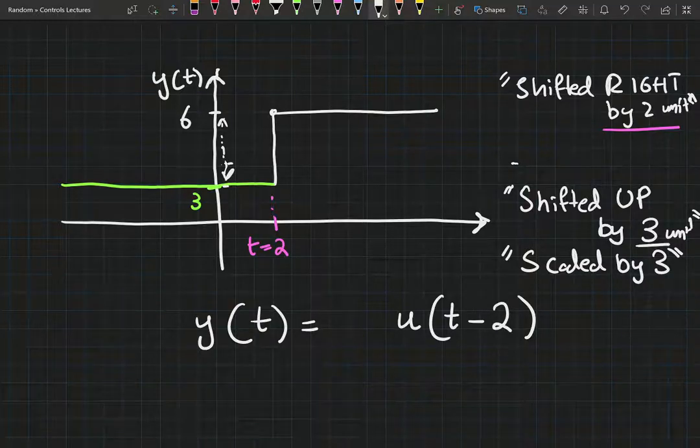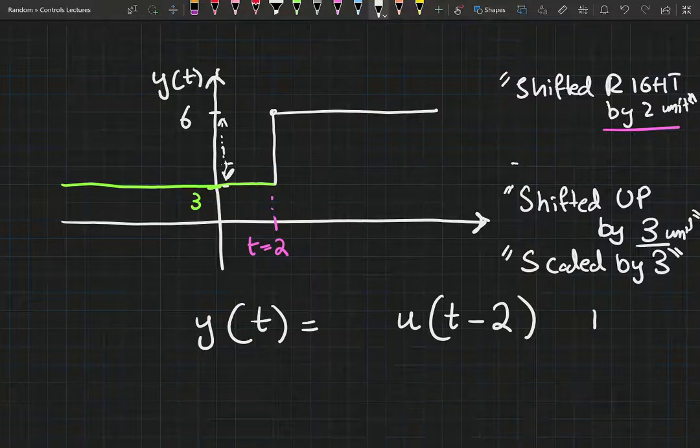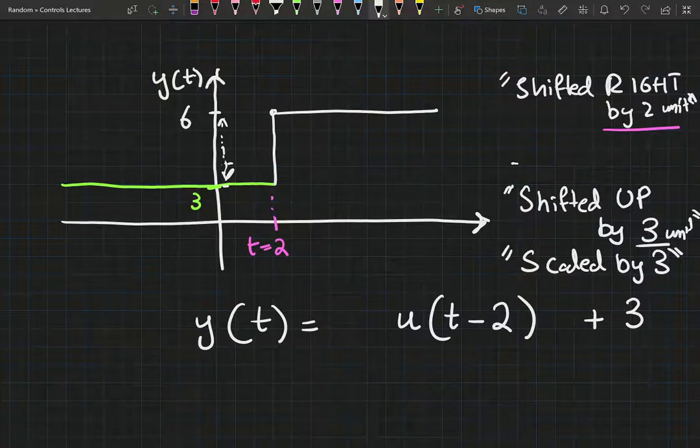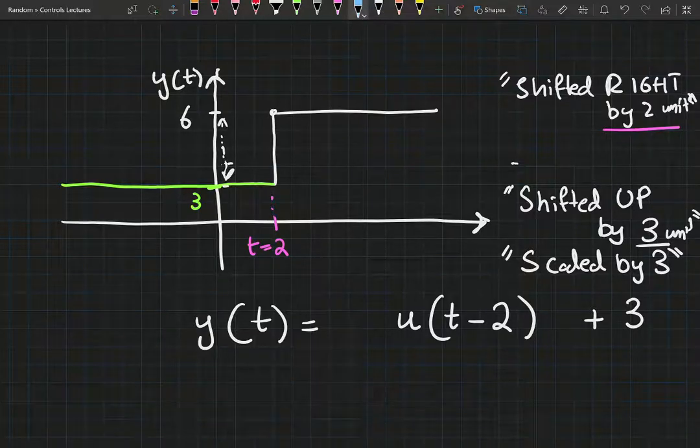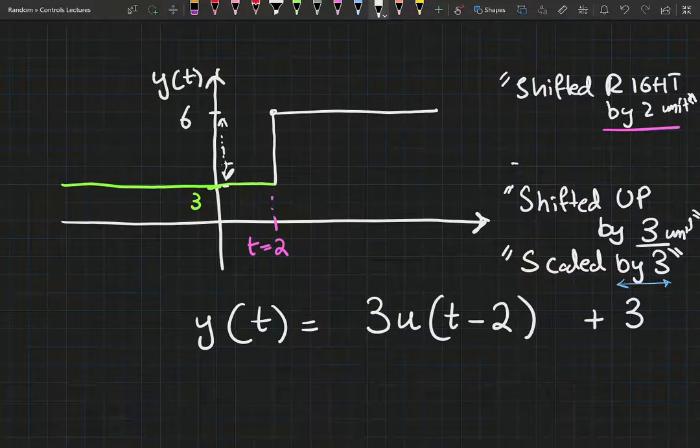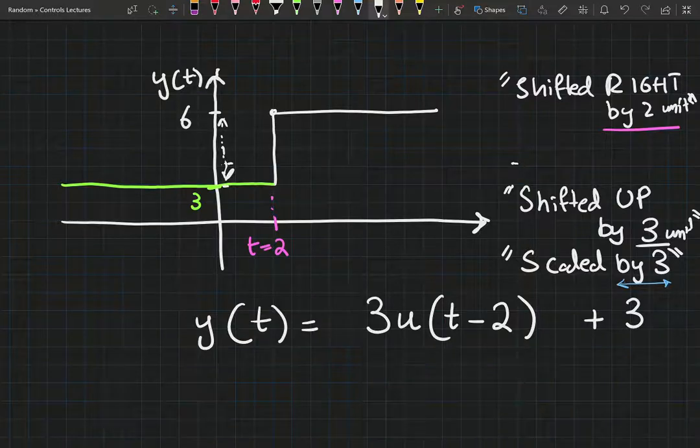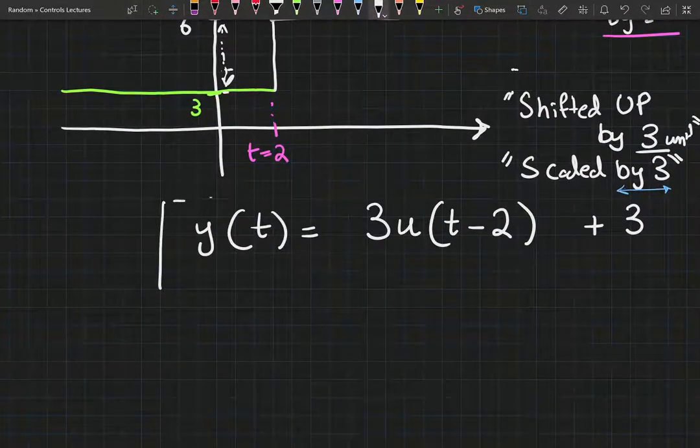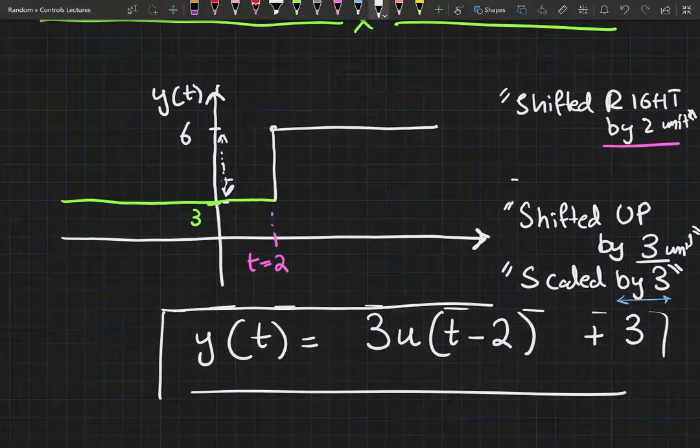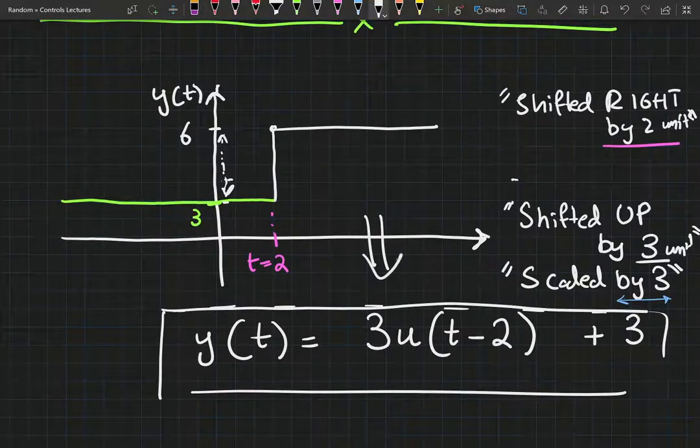Shift up. If you're shifting up, you just add the number of units that you're shifting your functions up. And the actual function, the amplitude or the scale of the function has been increased by three. So you're just going to add a three in front of the step function. The coefficient of the step function becomes three. And this becomes your model.